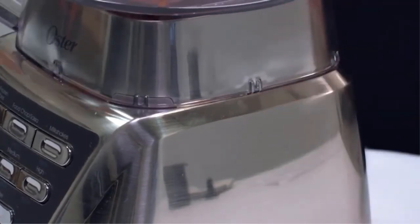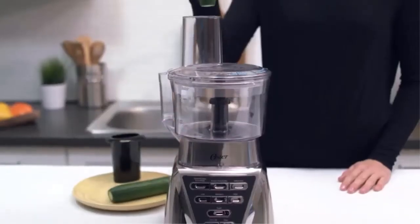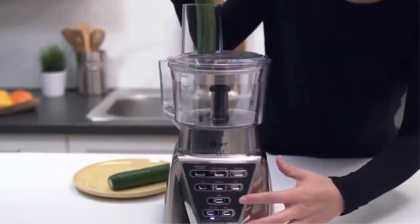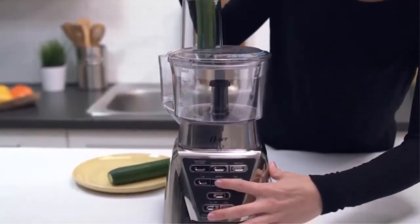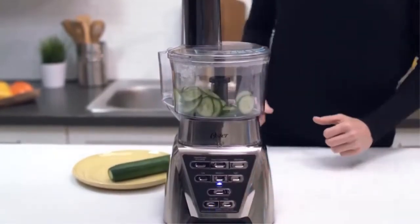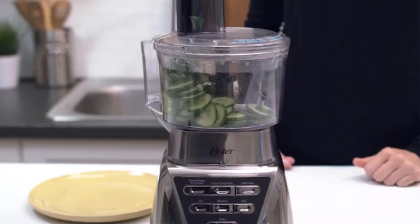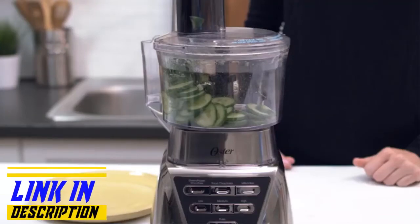To process, turn the blender on using the medium speed. When done, turn the unit off and unplug. That's it, you just made it fresh with your food processor attachment. The food chopper or food processor attachments make your food prep fast and easy so cooking up tasty meals and snacks is a breeze.